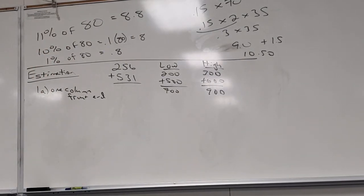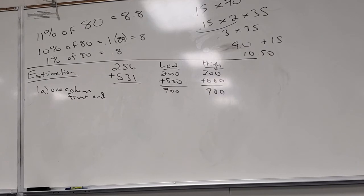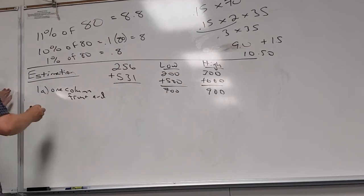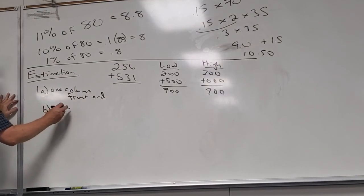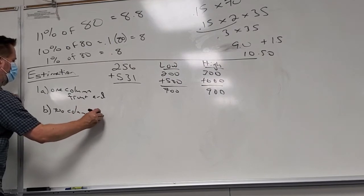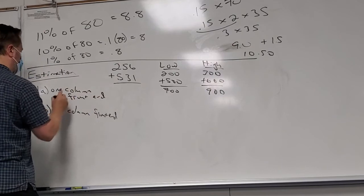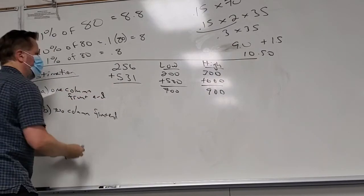How good your estimate needs to be determines which method you use. One-column front-end is coarse — a 200-unit range. If you need to know how many chairs to set up, you'd take the high estimate and be safe. Two-column front-end: use the first two digits — 250 plus 530 equals 780 (low), 260 plus 540 equals 800 (high). Better resolution immediately.